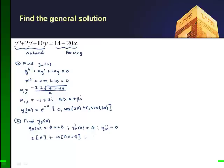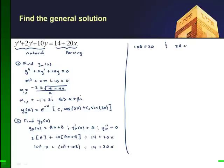And that should equal to the forcing 14 plus 20x. So if I rearrange this a bit, I'll get 10a times x plus 2a plus 10b is equal to 14 plus 20x. So if I want the left-hand side equal to the right-hand side, I'm going to assume that the coefficient of x on the left-hand side is equal to the coefficient of x on the right-hand side, or that 10a is equal to 20. And then I'll let the constant term 2a plus 10b equal to the constant term on the right-hand side, or 14.